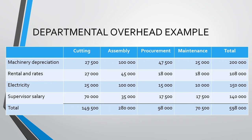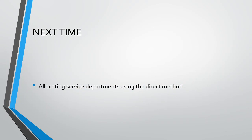The last step is to total each department. We have now seen the basics of how to allocate the overhead costs to the individual departments and are in a position to reallocate the service department overhead costs to the production departments. In our next video, we will use the direct allocation method. After that, we will use the specified order of closing method, then the repeated distribution or reciprocal method, and finally the simultaneous equation method in our last video in the series. See you next time!